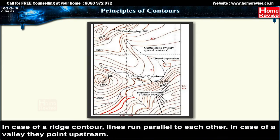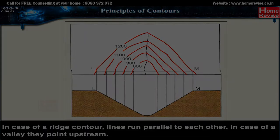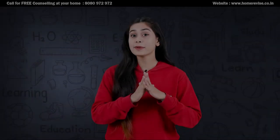In the case of a ridge, contour lines run parallel to each other. In the case of a valley, they point upstream.